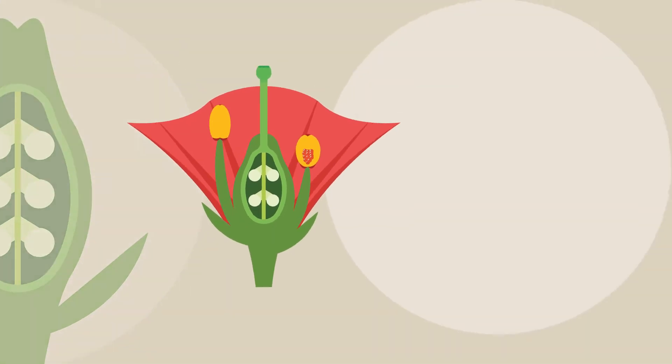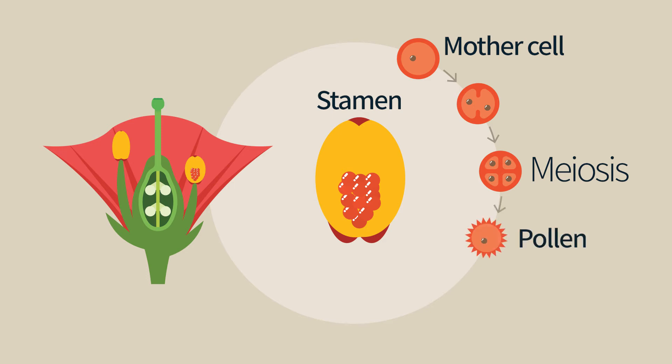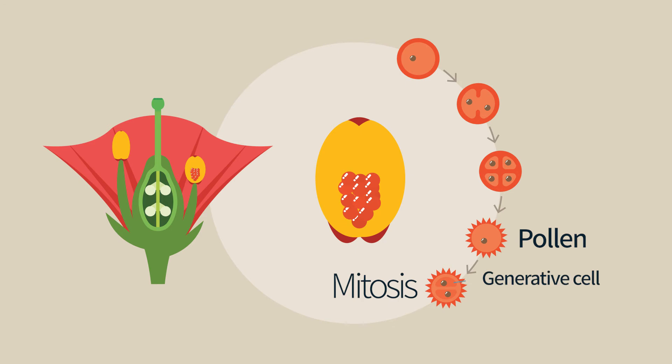Before talking about fertilization, let us describe the male part. Meiosis that gives rise to four haploid cells is here to the first stage. Each of these four cells will develop into a pollen grain. In the next stage, the haploid cell in the pollen grain will divide mitotically into two cells, the generative cell and the vegetative cell.